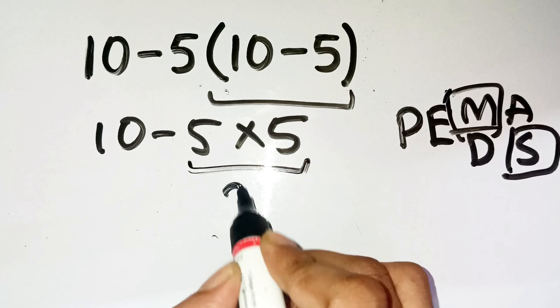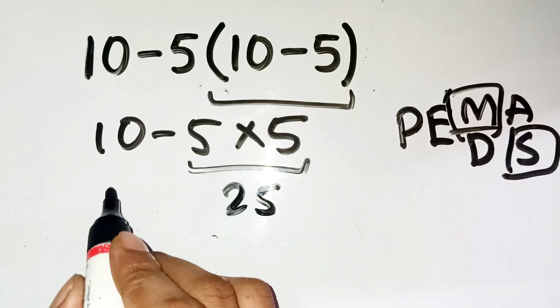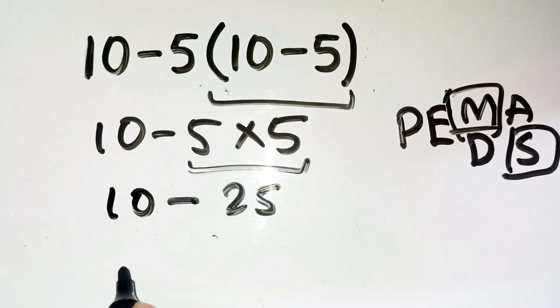Now, we're left with 10 minus 25, which equals negative 15. Yep, negative 15, not 25.